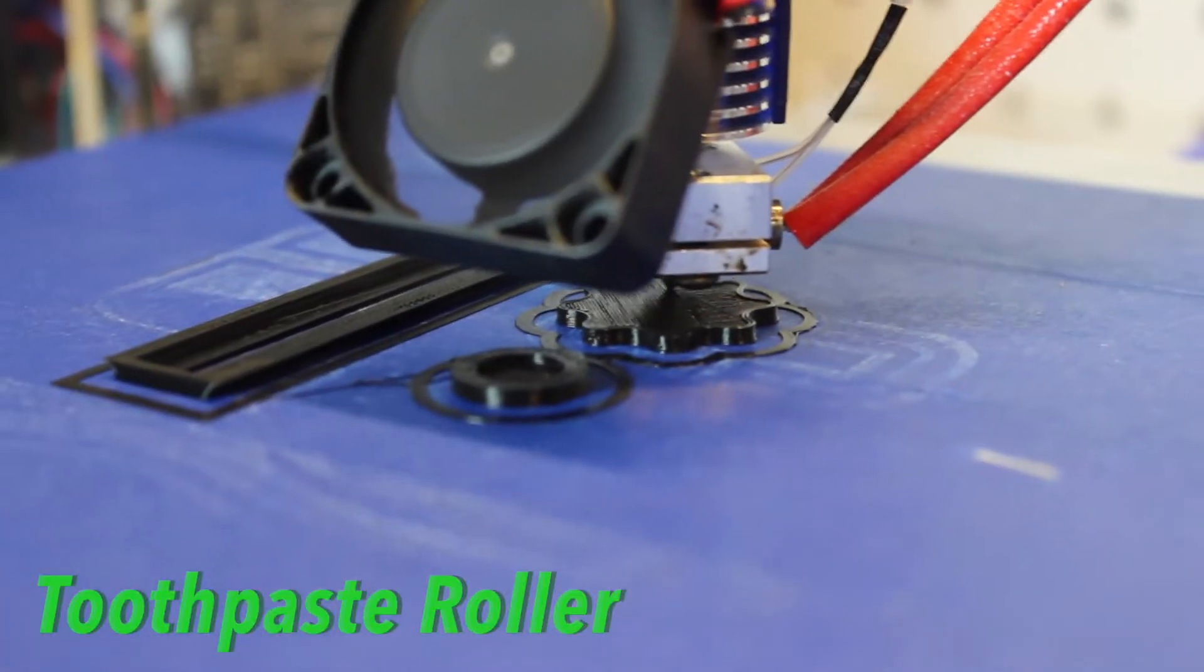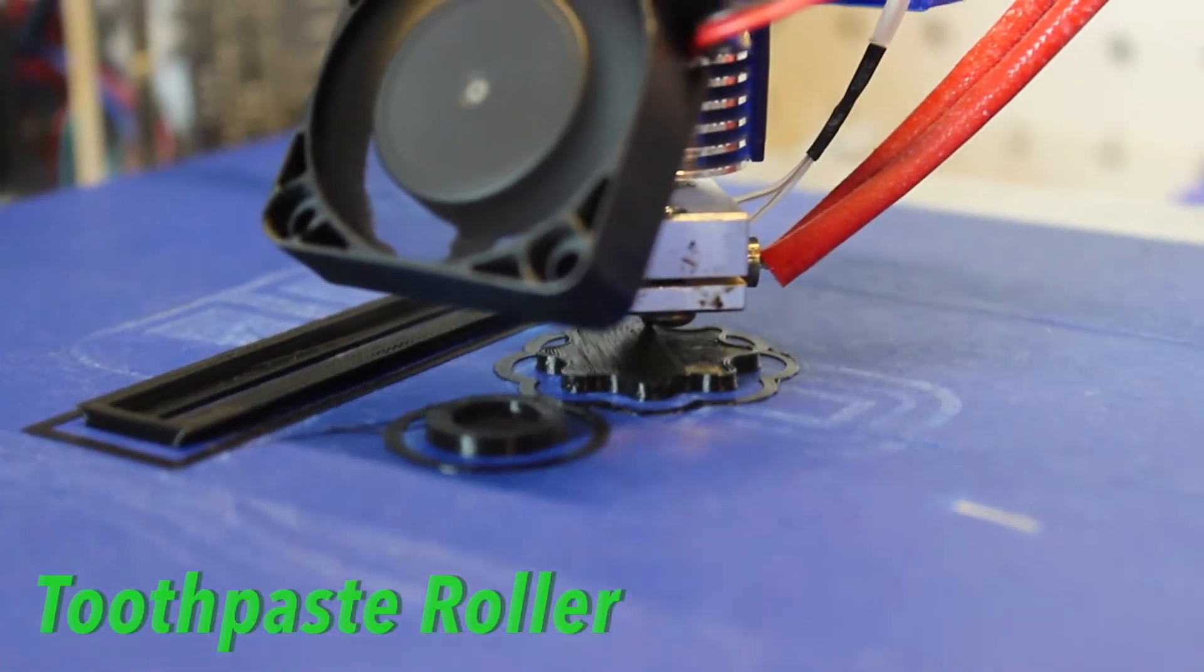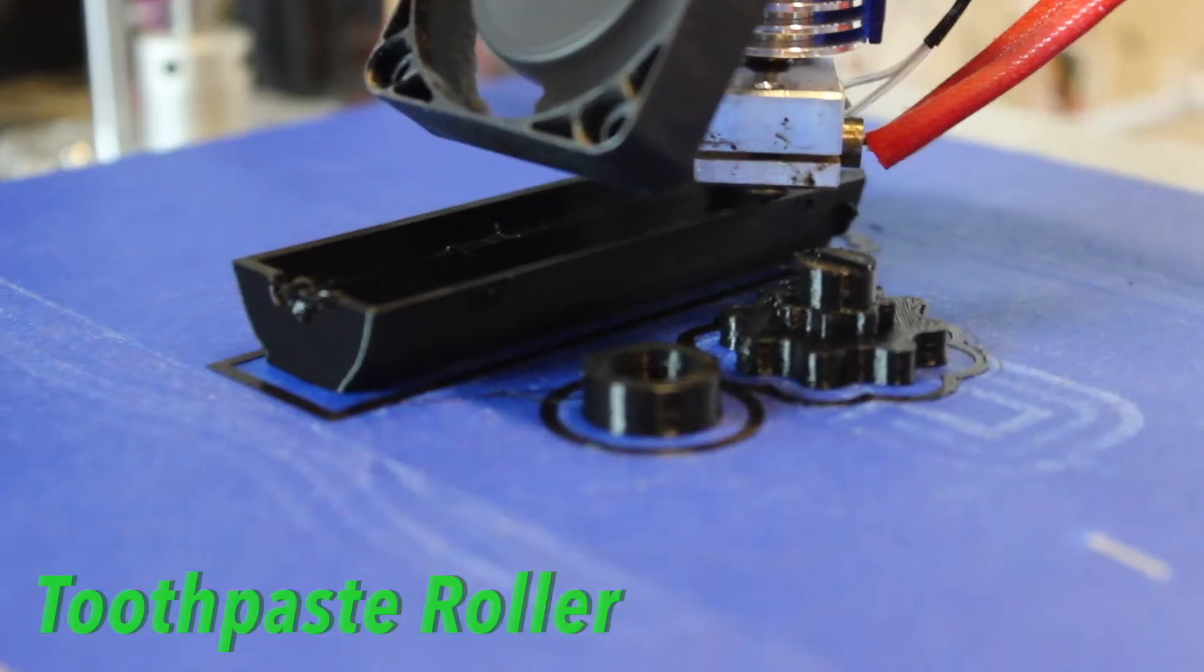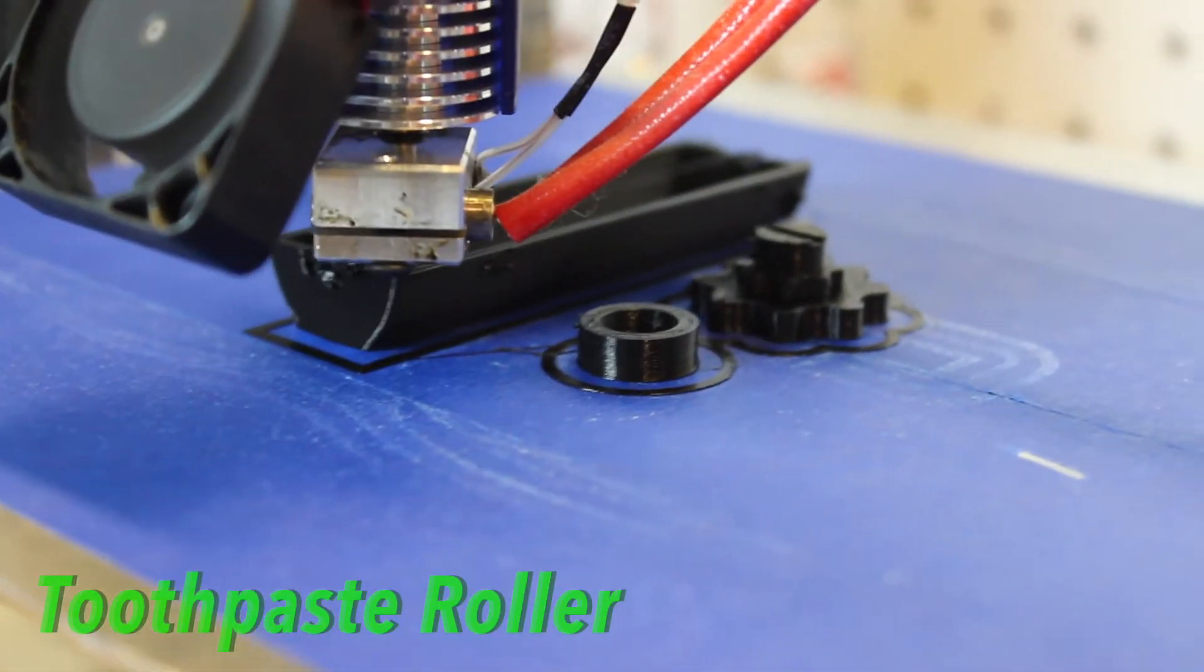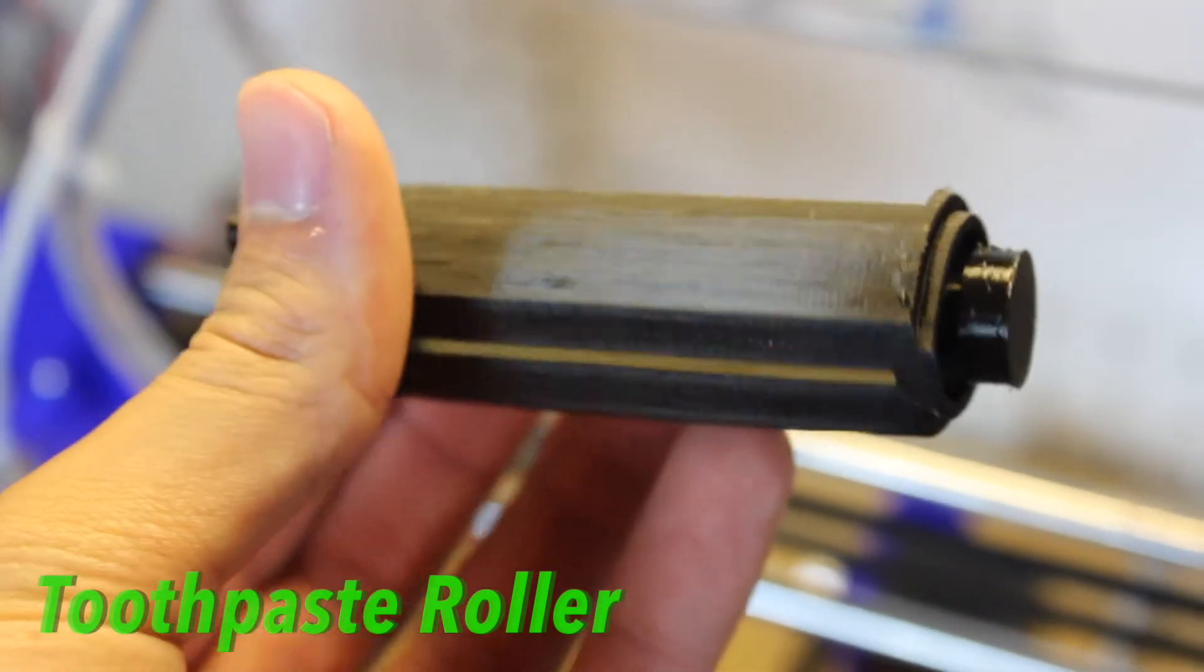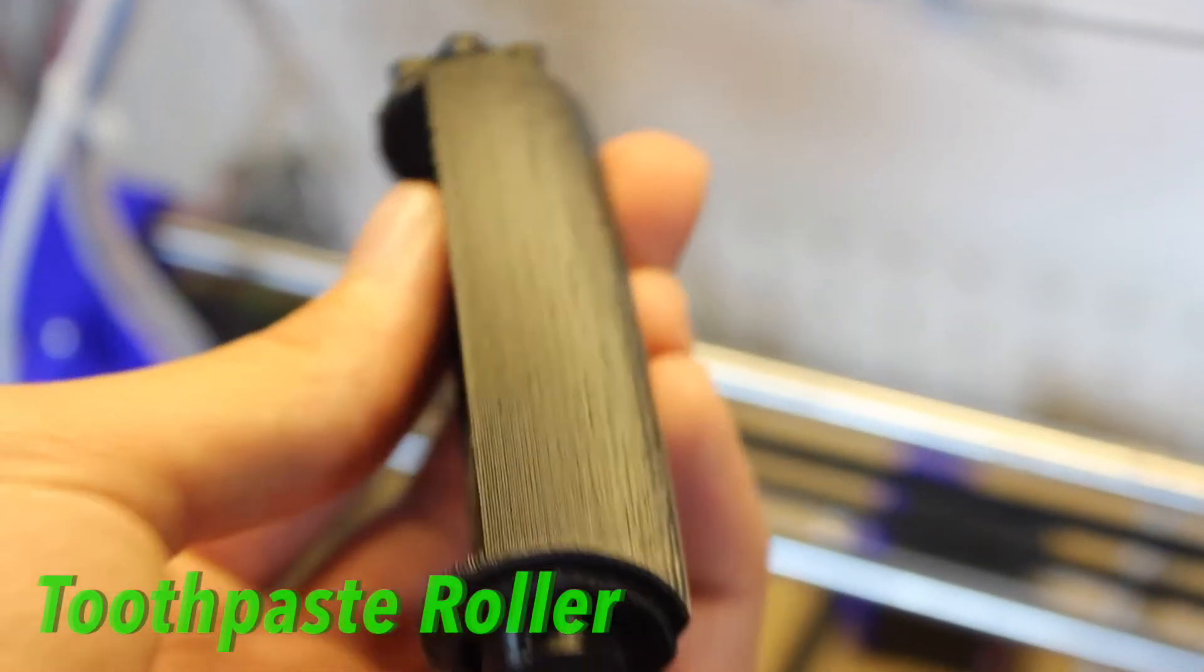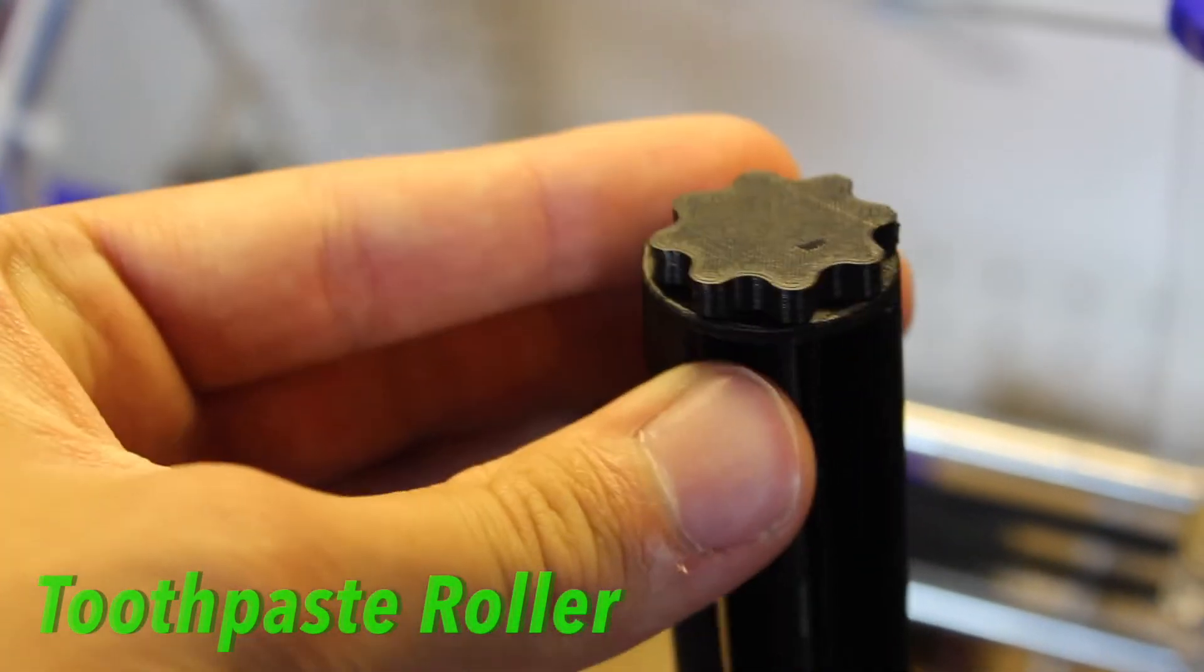So the first thing I printed with the Fusion filament is a toothpaste roller. This is more of a functional print. This print came out perfect. The finish was a smooth black finish and the plastic was super strong. Didn't break when I tried to use it. Overall a great print.